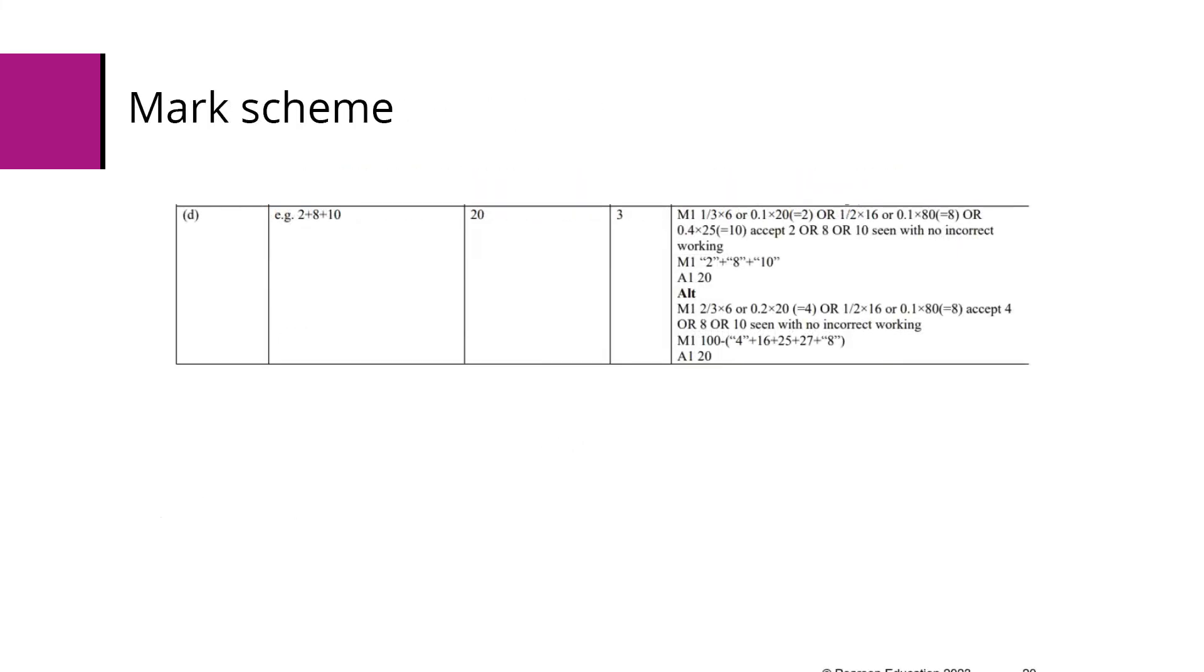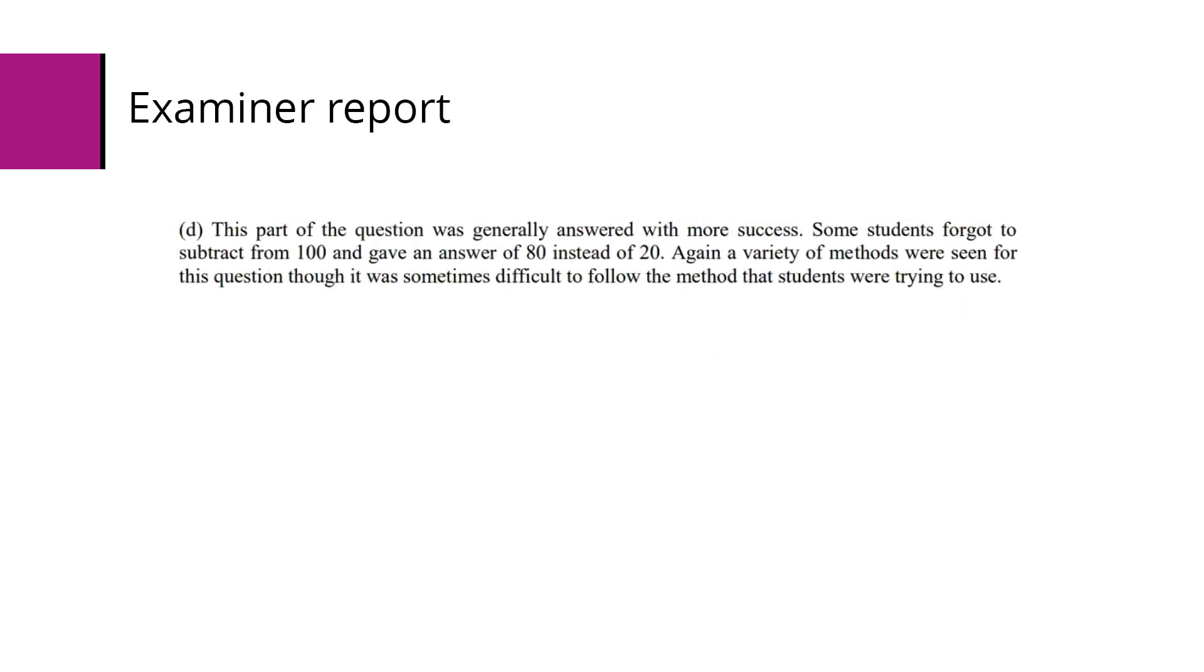The mark scheme is essentially method mark for finding any of the sections that we want, second method mark for adding them up, and an accuracy mark for the answer. You would be given credit for finding the middle section and taking that away from 100 as well, although that's a longer process. The examiner's report shows that this was largely well answered, although there is a comment about how considering students laying out their work to make it easier to follow may be of use, because it's sometimes a little bit difficult to tell what it is a student's doing, but generally answered fairly well.